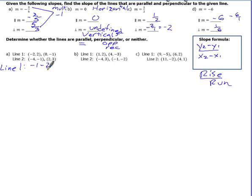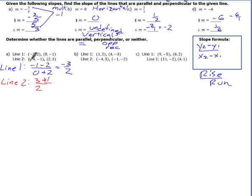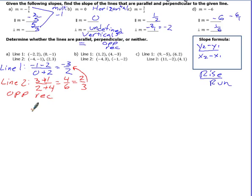For the first set, line one: negative one minus two over the x difference — because it's minus a negative, we add — giving a slope of negative three over two. Line two: three minus negative one is four, two minus negative four is six, giving four over six. Simplified by dividing both by two, that's two-thirds. Comparing two-thirds and negative three-halves, those are opposite reciprocals, so these lines are perpendicular.